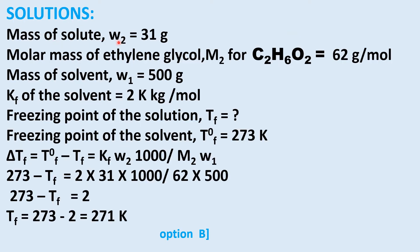Mass of solute W2 = 31 g. Molar mass of ethylene glycol C2H6O2: 12×2 + 1×6 + 16×2 = 62 g/mol. Mass of solvent W1 = 500 g. Kf = 2 K·kg/mol. Freezing point of solvent T0f = 273 K. Using ΔTf = T0f − Tf = Kf × W2 × 1000 / (M2 × W1): 273 − Tf = 2 × 31 × 1000 / (62 × 500) = 2. Therefore Tf = 273 − 2 = 271 Kelvin. Option B is correct.